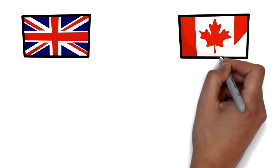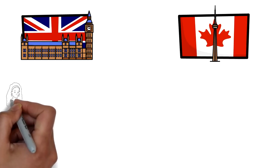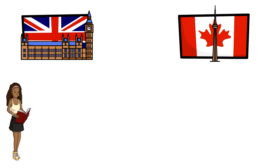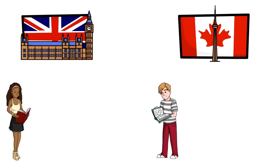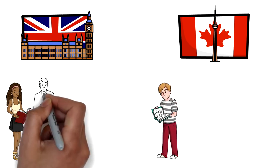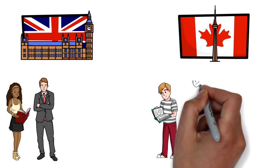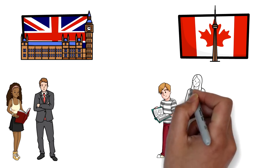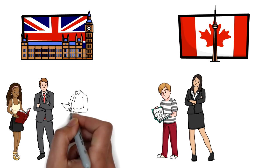Now let's discuss immigration programs — because without knowing how to immigrate, the rest of the comparison wouldn't make much sense. Both UK and Canada have different immigration programs for different kinds of people. If you're a student, both countries offer student visas. If you want to start a business and have the required capital, both offer entrepreneur visas. There are also visas for refugees and humanitarian cases.